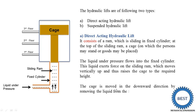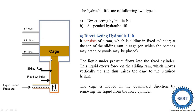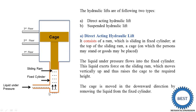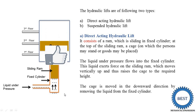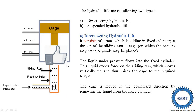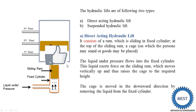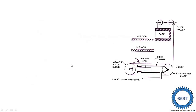When the cage is moving in the downward direction, the liquid from the cylinder is removed from the cylinder. Next, we understand the suspended hydraulic lift.